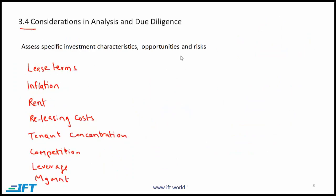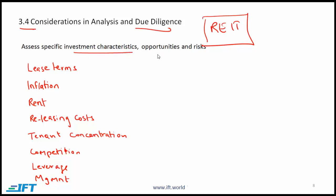Section 3.4 provides guidance on the due diligence an investor should perform before investing in a particular REIT. The basic idea is straightforward — you want to understand the specific characteristics of the investment, the possible opportunities and the risks. These aspects are REIT-specific, but you'll see parallels with the analysis of a regular company stock. The first point is lease terms — the REIT agreements with customers, i.e., the entities leasing the properties. We need to look at whether lease terms are favorable, how long the leases are, and whether they are up for renewal soon.